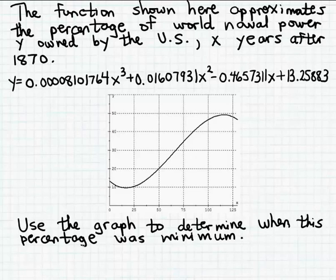What we want to do is use the graph of this polynomial function to determine when this percentage was minimum. We can answer this question by finding the local extrema of this polynomial function, and we can see these local extrema on the graph pretty clearly.